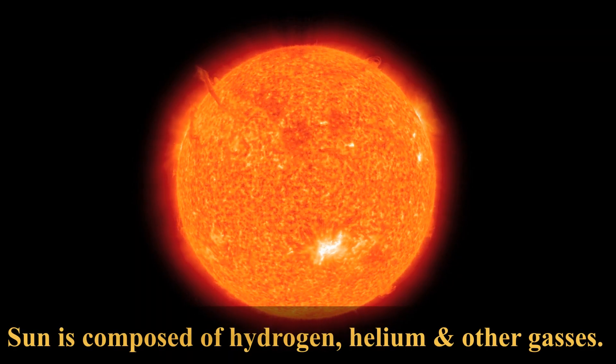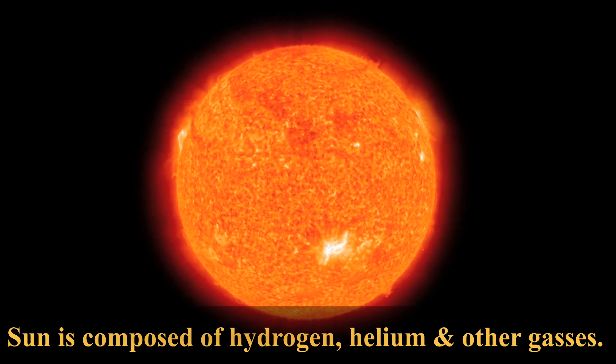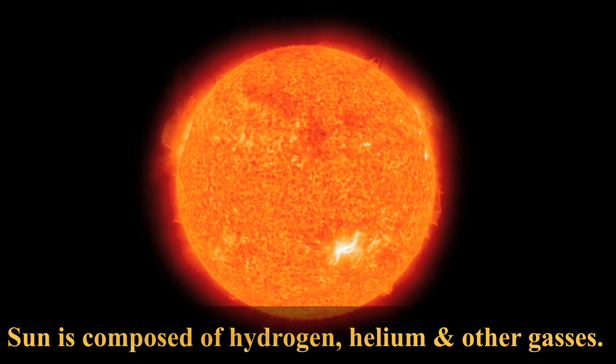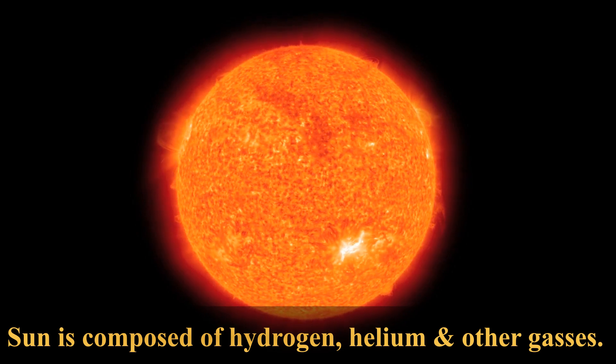The Sun is composed of 92% hydrogen, 7% helium and 1% other gases. Six ten billionths of the Sun are made of gold.